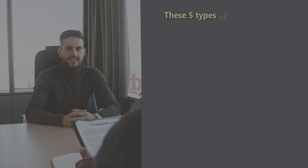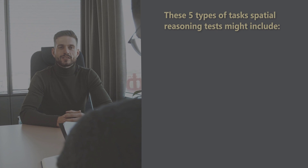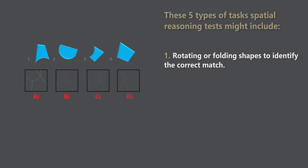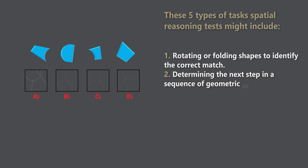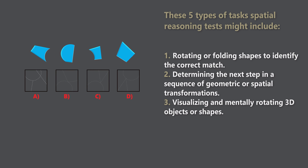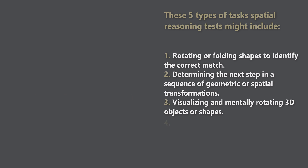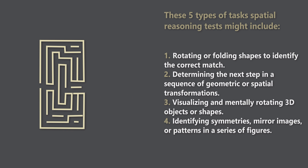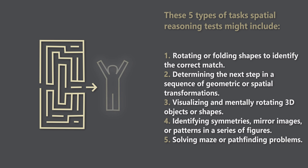There are typically five types of questions used on spatial reasoning tests. Number one is rotating or folding shapes to identify the correct match. Number two is determining the next step in a sequence of geometric or spatial transformation. Number three is visualizing and mentally rotating 3D objects or shapes. Number four is identifying symmetries, mirror images, or patterns in a series of figures. And number five is solving maze or pathfinding problems.